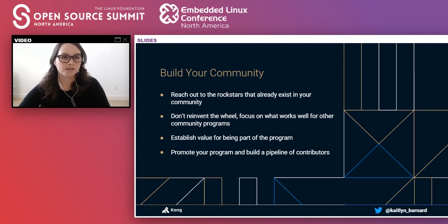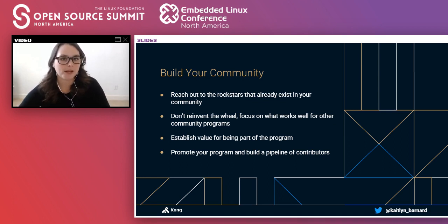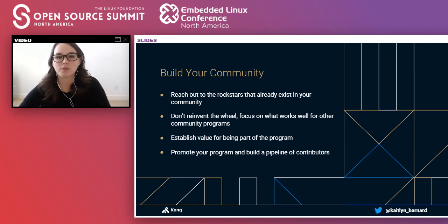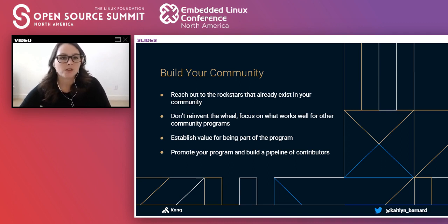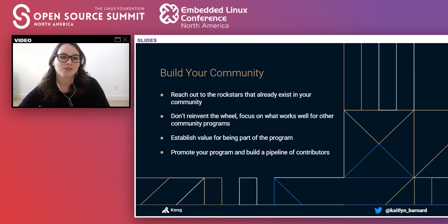Now that we've got our goals and contributor pipeline, how do we start building our ambassador program? There are four initial things I like to do. First is reaching out to people in your contributor pipeline — not only are they your potential ambassadors, but you can find out what they want out of a program and build around that. For CNCF, we started with people already hosting Kubernetes meetups; for Kong, we started with our most active contributors and users. Second is do your research: what communities exist in the space, what's working, what isn't, and how can you differentiate?